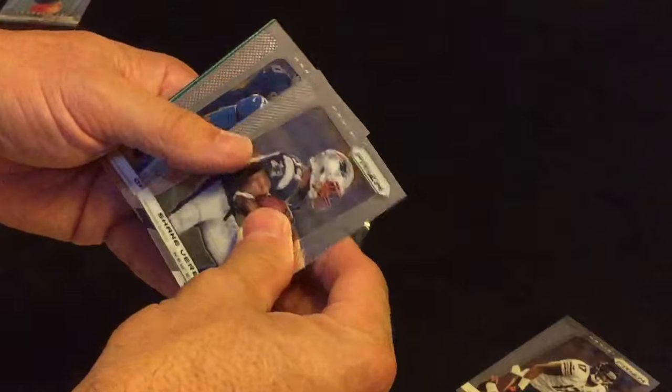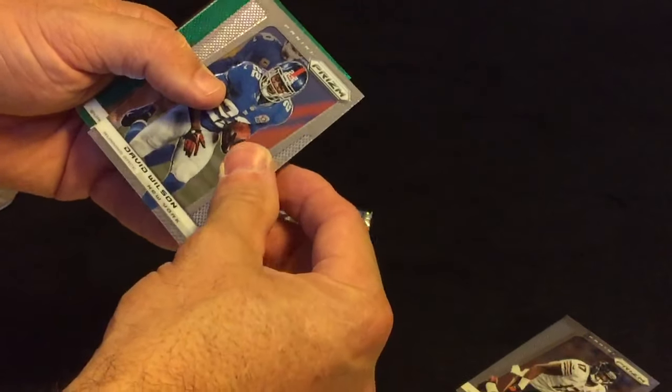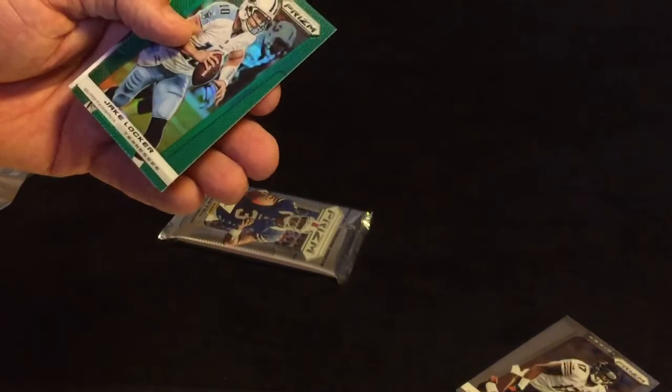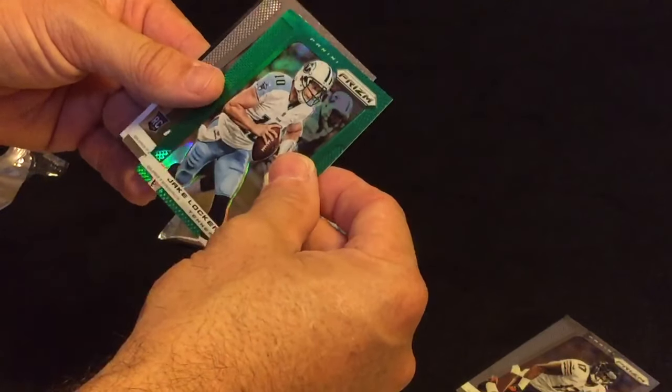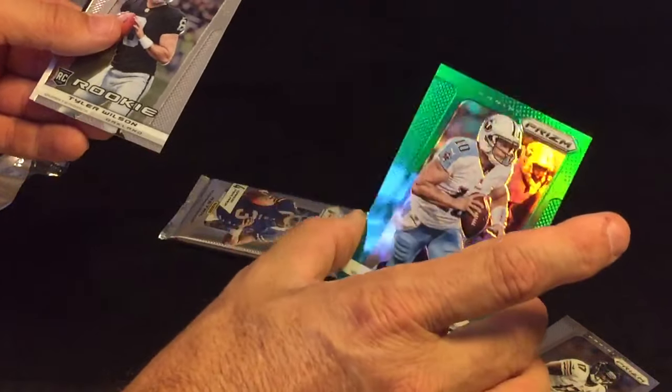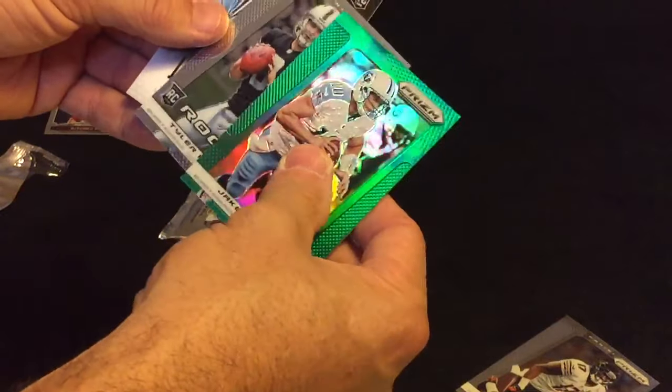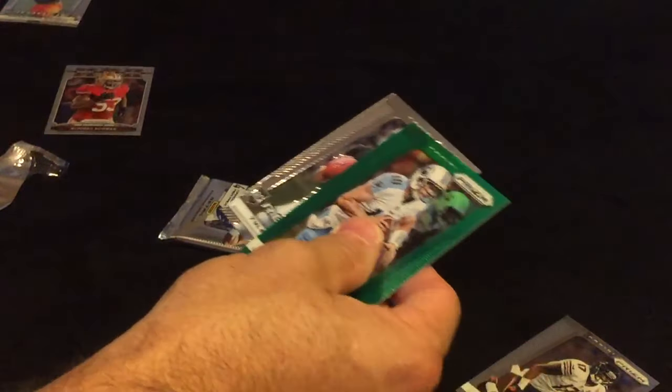We got a green. Vernon. David Wilson. And Jake Locker. Pretty cool. Tyler Wilson rookie. And Hunter rookie.